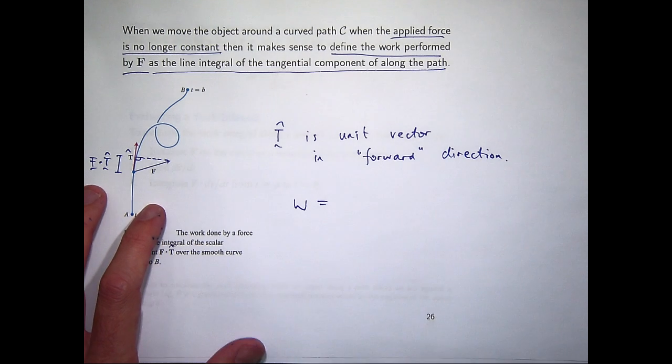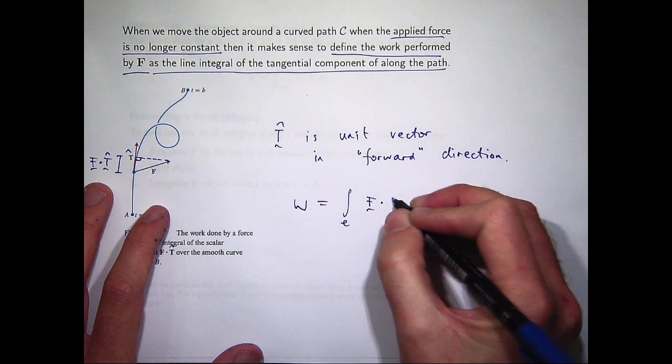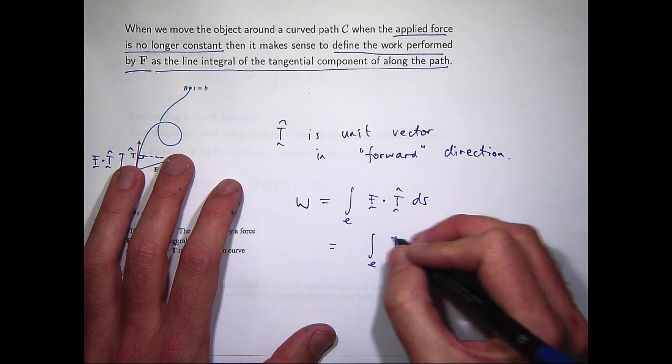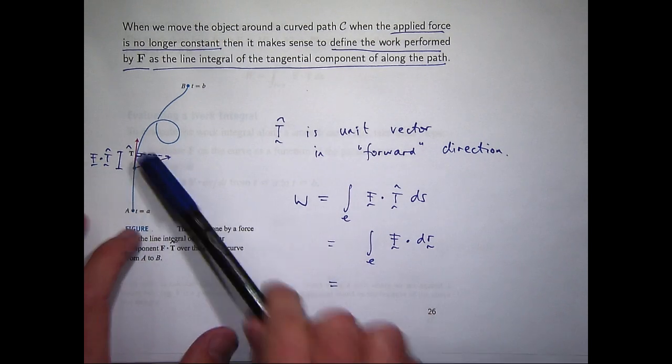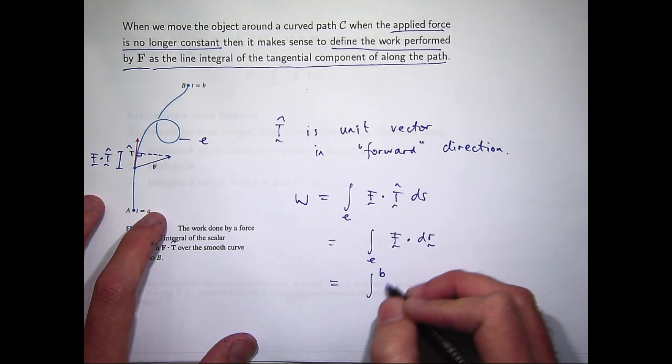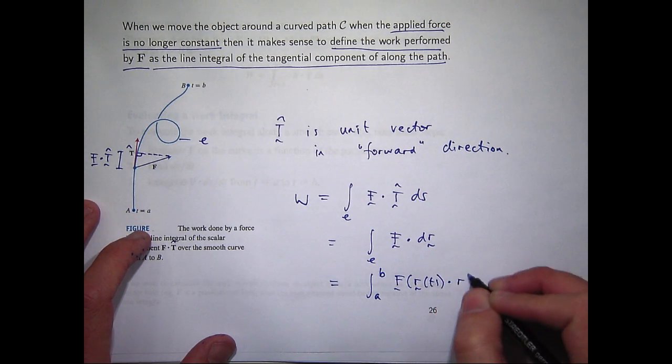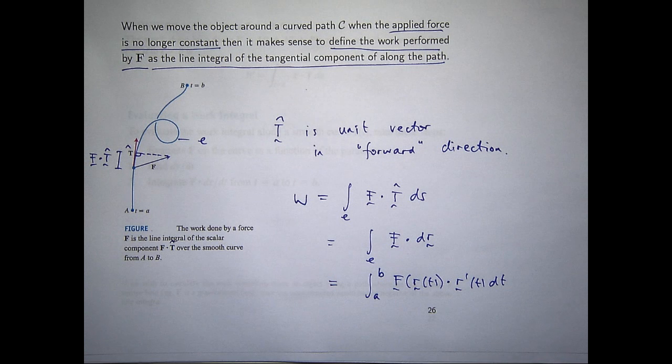When we talk about the work performed by F, essentially it's a path integral. So I'm integrating that dot product with respect to the arc length over the curve C. Now, we can also write it via this compact form. And if we have a way of describing this curve C, then essentially it's the following, just integral with respect to T.